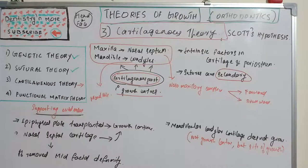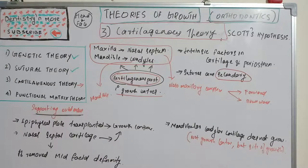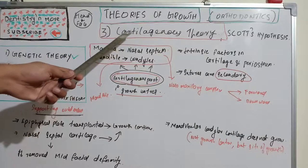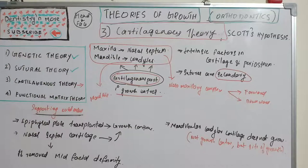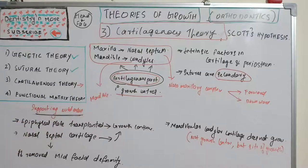Welcome back to a new video on dentistry. Today's topic is cartilaginous theory. In theories of growth, we have covered genetic theory and structural theory. This particular theory, given by Scott, concentrates on cartilage. It is also known as Scott's hypothesis, emphasizing the role of cartilage in growth and development of the head and face region, where the cartilaginous part acts as a primary growth center in the maxilla and mandible.